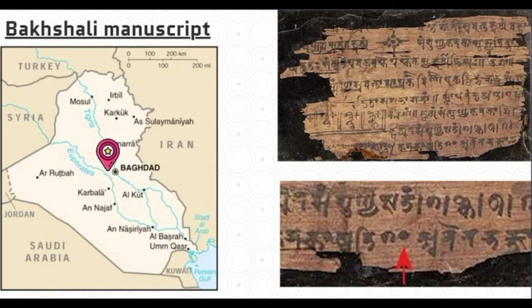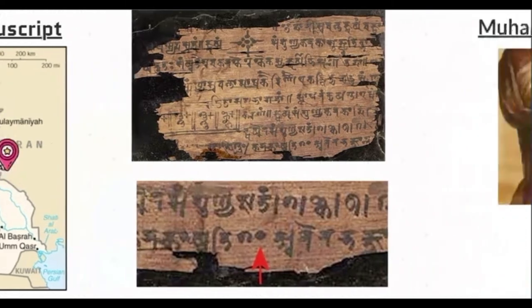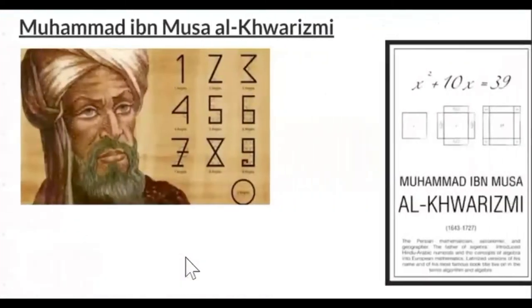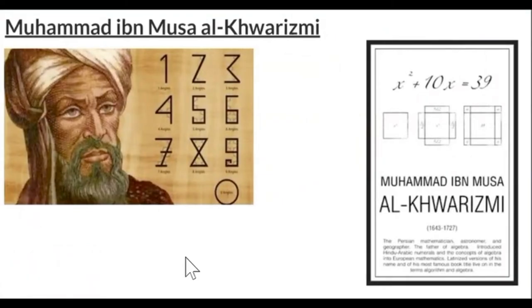Then zero reached Baghdad, the capital of Iraq, by 773 AD. In the 9th century, Muhammad was the first to work on equations that equaled zero. He wrote a book on algebra and on calculations.